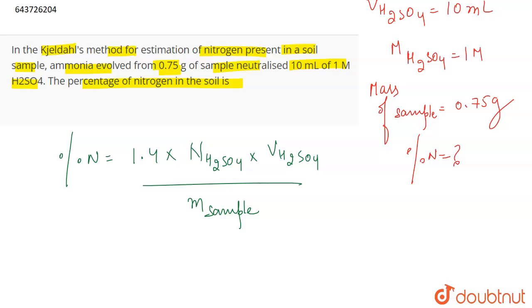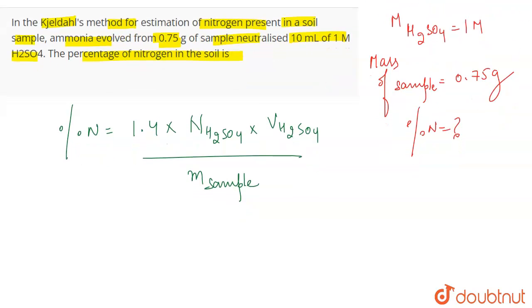To find out the normality, what we have to do is write down the reaction. So how do we actually find out the normality? Normality is actually the molarity times n-factor.